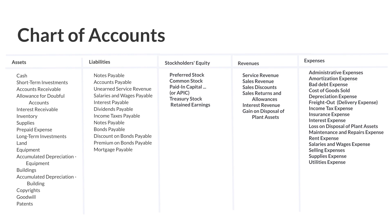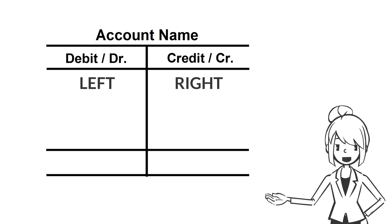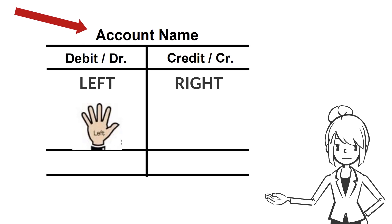In its simplest form, an account consists of three parts: a title or account name — such as cash or accounts receivable — a left or debit side, and a right or credit side.